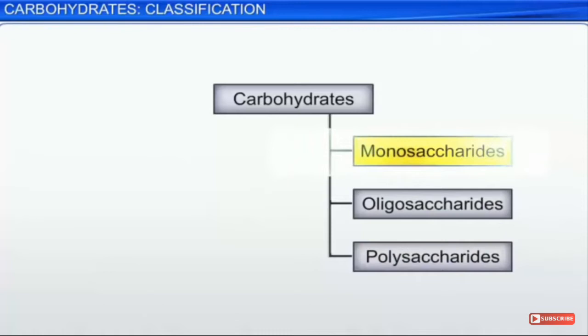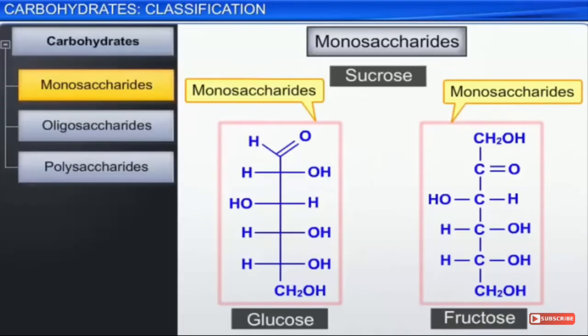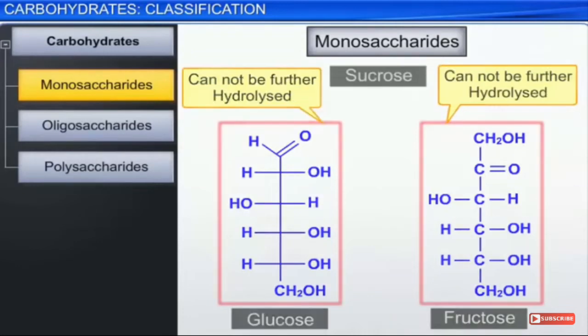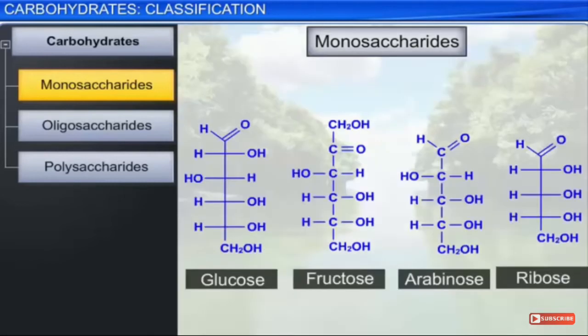We are going to see each one in detail. Monosaccharides are the simple form of polyhydroxy aldehyde or polyhydroxy ketone. They cannot be further hydrolyzed. Examples include glucose and fructose — glucose is an example of aldose, and fructose is an example of ketose.